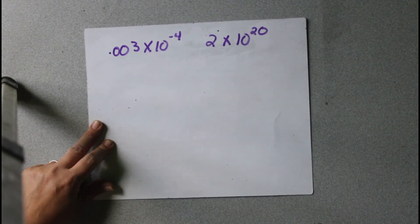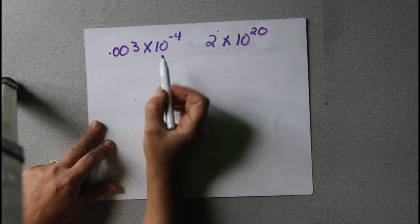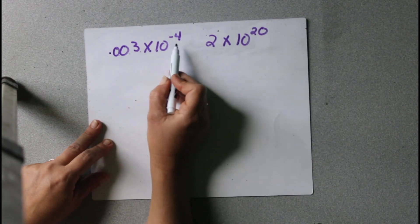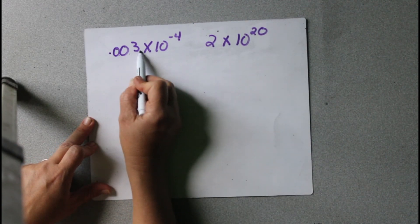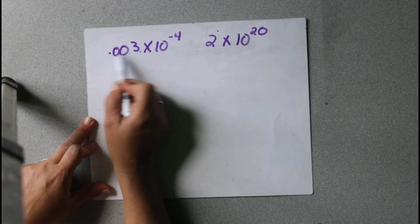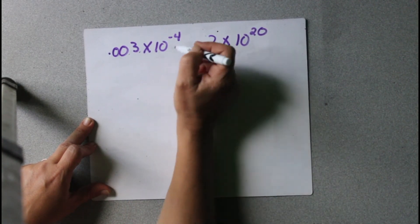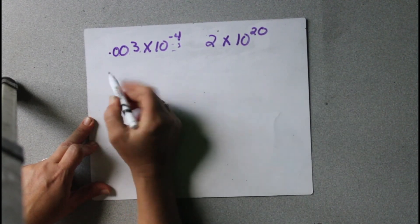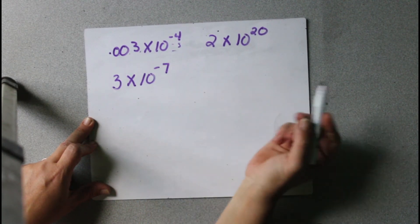The first one says 0.003 times 10 to the negative 4th, and 2 times 10 to the 20th. We're supposed to write those in scientific notation and then multiply. First, we've got to put the numbers into scientific notation. For this one, we have to move the decimal 1, 2, 3 places — and 3 plus 4 is 7 — making it from a tiny number into a big number, so that means negative. So that would be 3 times 10 to the negative 7.